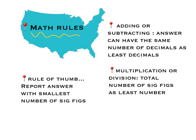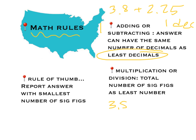Here are the rules when you do math and want to determine how many sig figs to have. For adding or subtracting, the answer can have the same number of decimal places as the least decimals — so adding 3.8 and 2.25, your answer can only have one decimal. For multiplying 3.8 times 2.25, your answer can only have the same as the least number of sig figs, so the answer would only have two sig figs. Always report the answer with the smallest number of sig figs.